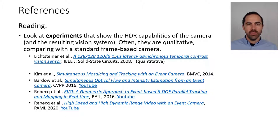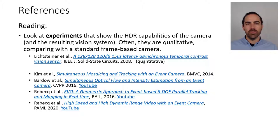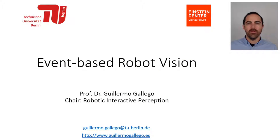So those are some references, and I encourage you to look at the experiments that show the high dynamic range capabilities of the cameras and the resulting vision systems. Often they are qualitative, comparing with a standard frame-based camera. The first one — the seminal work — tries to be a bit more quantitative and uses a light meter to give actual numbers. Thank you very much for your attention.